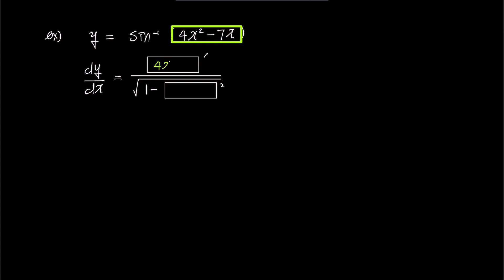The derivative of the numerator 4x squared minus 7x is 8x minus 7, and the denominator remains square root 1 minus 4x squared minus 7x squared. That's it. Even though the problem may have seemed complex, we found the answer in just one line.